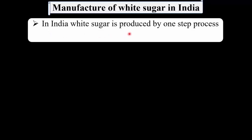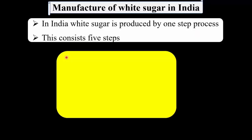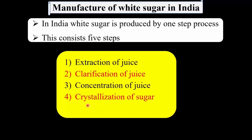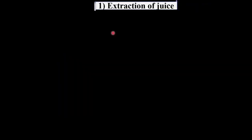In India, white sugar is produced by a one-step process which consists of five steps: first, extraction of juice; second, clarification of juice; third, concentration of juice; fourth, crystallization of sugar; and fifth, separation of sugar crystals from the molasses.